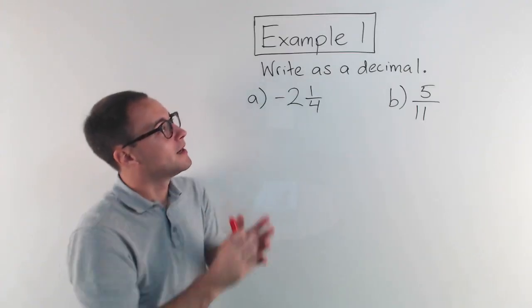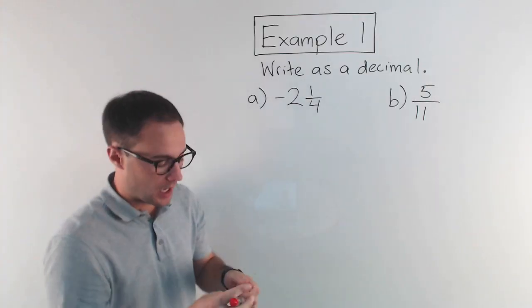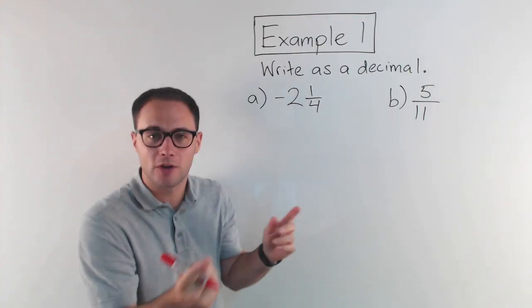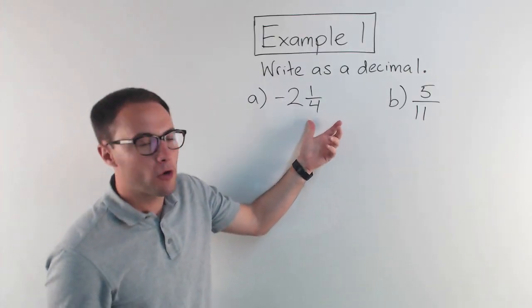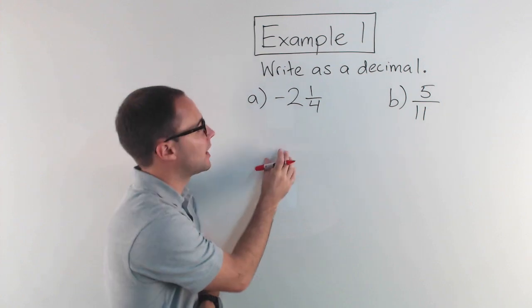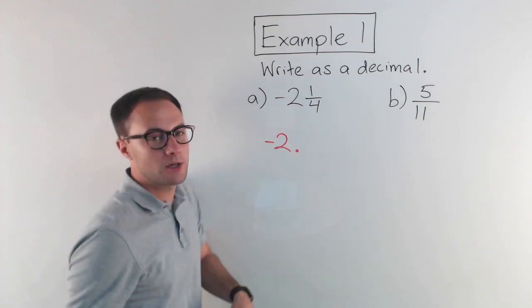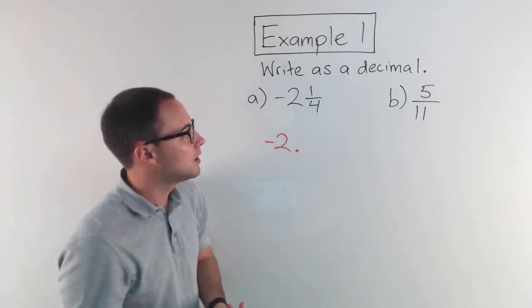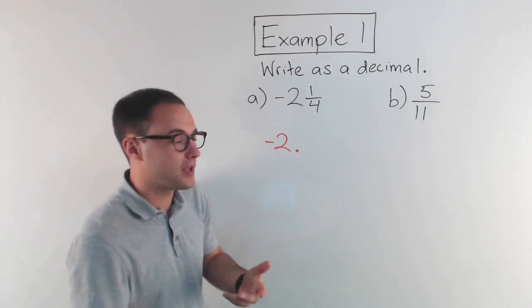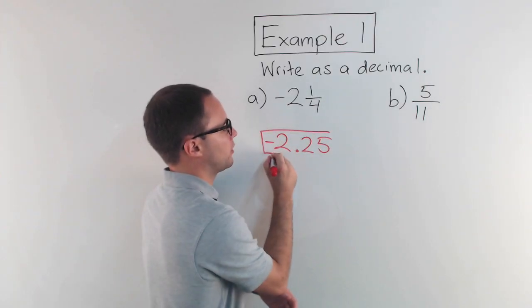Example one: write as a decimal. We're going to convert each of these to a decimal. Fractions and decimals — you can go back and forth between the two. Negative two and one-fourth: well, that's two wholes, so that's going to be negative two, and then I've got to think what is one-fourth as a decimal. One-fourth as a decimal is 0.25, so that's simply negative 2.25.